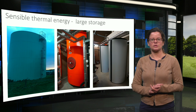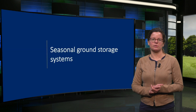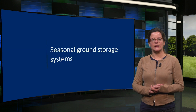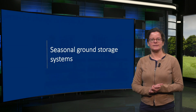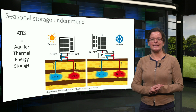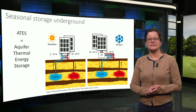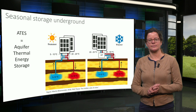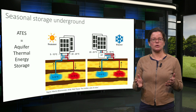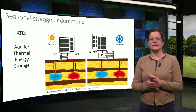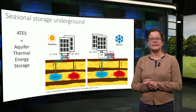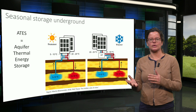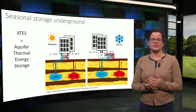Therefore, the subsurface is often used for seasonal thermal energy storage. Subsurface aquifers — underground layers of sand with groundwater — can be used to store heat. These systems are called ATES systems: aquifer thermal energy storage. In these systems two wells are drilled, which will become a cold well and a warm well. In summer, groundwater is extracted from the cold well. It passes through a heat exchanger in order to cool a building. The heat from the building is transferred to the groundwater, which is then injected into the warm well.